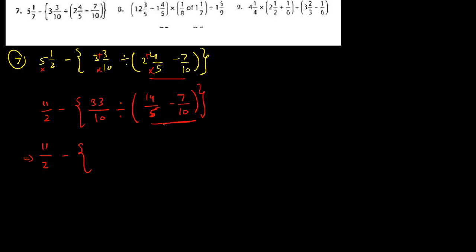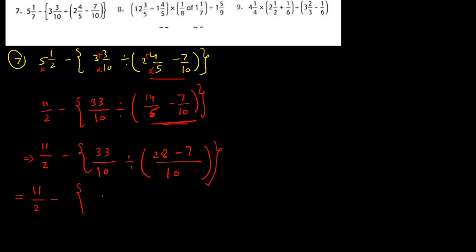Now we solve the small bracket. The LCM of 5 and 10 is 10. Five twos are ten, and two into fourteen is twenty-eight, minus seven. So you get twenty-eight minus seven equals twenty-one, giving 21 upon 10. So the expression becomes: eleven upon two minus thirty-three upon 10 divided by 21 upon 10.